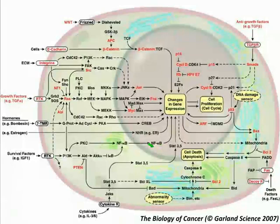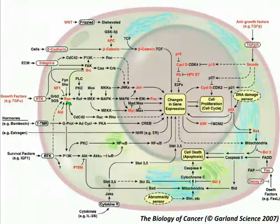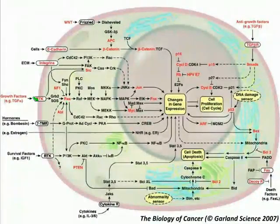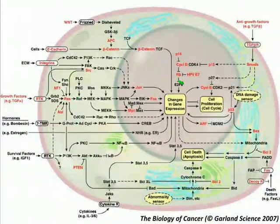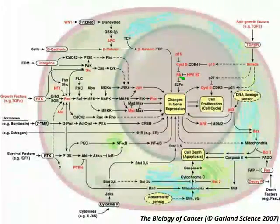As you can see, genes shown in red are frequently mutated in tumor cells, and these mutations occur at all levels of the growth-promoting signaling pathways, as well as antimitogenic and cell death-inducing pathways.